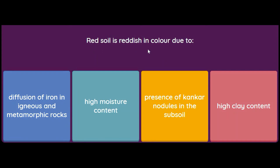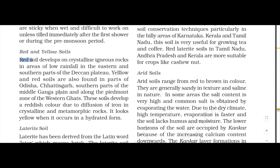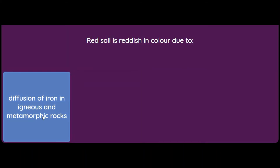Red soil is reddish in color due to the diffusion of iron in igneous and metamorphic rocks. As the book says: red soil develops on crystalline igneous rocks in areas of low rainfall in the eastern and southern parts of the Deccan Plateau. It looks yellow when it occurs in hydrated form. So the answer is diffusion of iron in crystalline and metamorphic rocks.